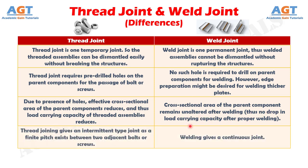Number 4: thread joining gives an intermittent type joint, as a finite pitch exists between two adjacent bolts or screws. Whereas, welding gives a continuous joint.